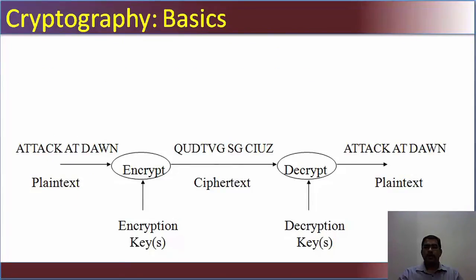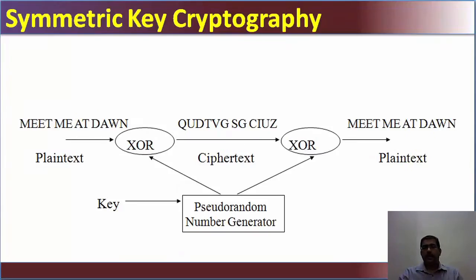A simple representation of how cryptography works: 'attack at dawn' is a plain text. It is put through an encryption algorithm, or an encryption key is applied, and you get a resulting cipher text. At the receiving end, the cipher text is decrypted with a decryption key or the same algorithm used for encrypting, and you get the resulting plain text 'attack at dawn.' In this case the keys are shared — the key used for encryption is also used for decryption. That is the fundamental concept of symmetric key cryptography.